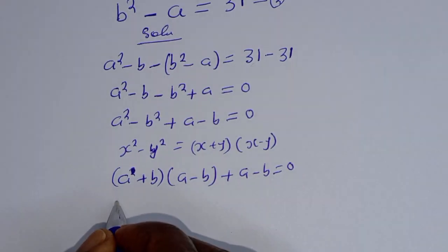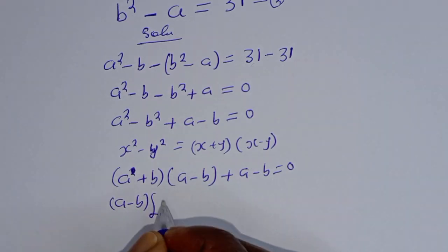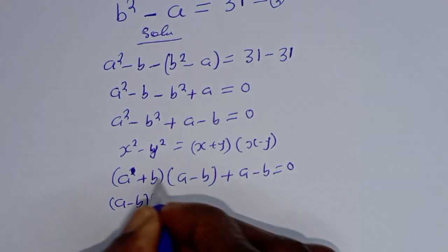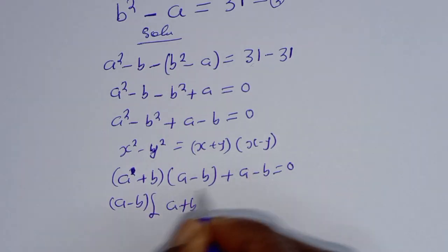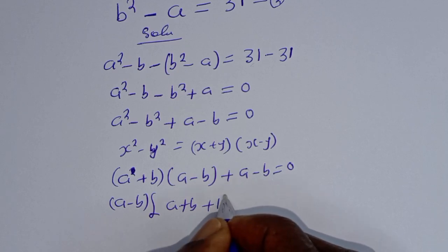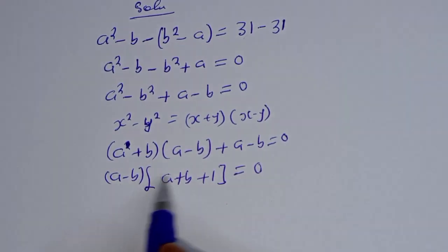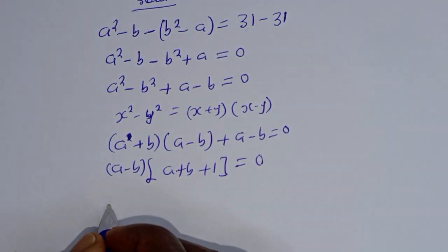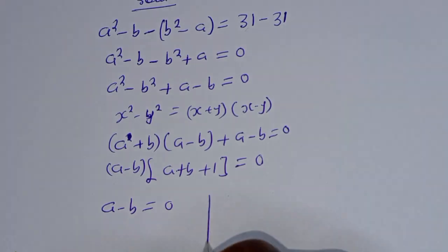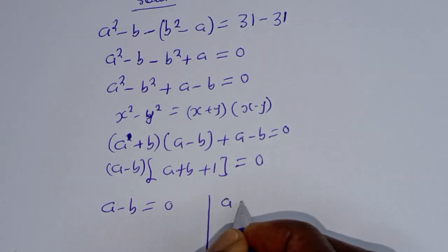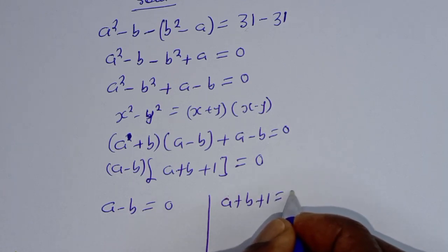A minus B is common — let's factor it out. A minus B times (A plus B plus 1) equals 0. There are two cases here. The first case is A minus B equals 0. The second case is A plus B plus 1 equals 0.